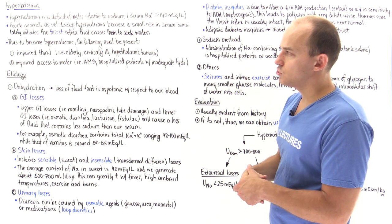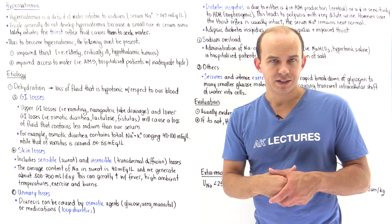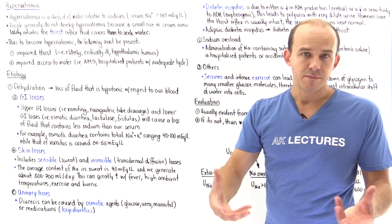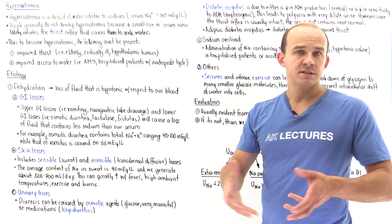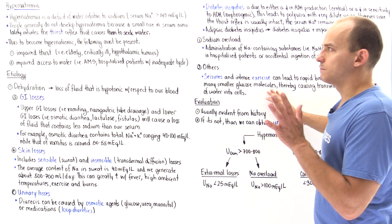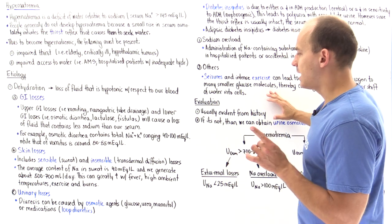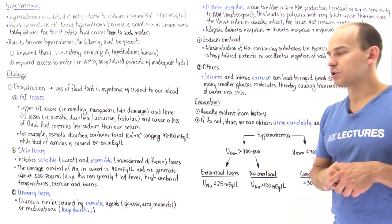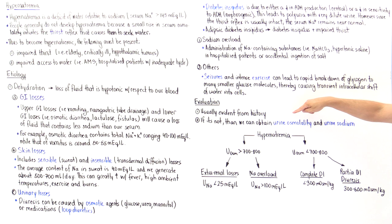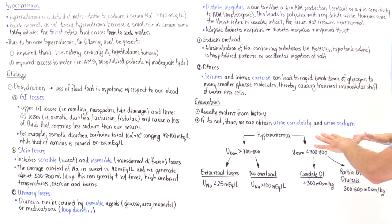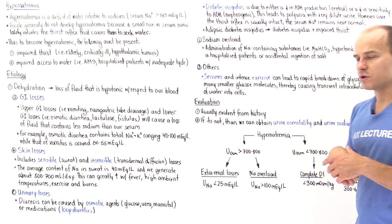For example, in a hospitalized patient, if we're only giving one liter of fluid a day, they're going to lose much more than that and become dehydrated over time — which we can fix by upregulating the fluids given. If the cause isn't apparent from history, we can obtain certain lab values: urine osmolality and urine sodium level, using a flowchart to determine the cause.